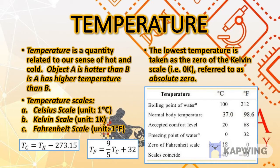We can convert from one scale to another using the following equations. To convert between Celsius and Kelvin: TC = TK − 273.15, where TC is temperature in Celsius and TK is temperature in Kelvin. To convert between Celsius and Fahrenheit: TF = (9/5)TC + 32, where TF is temperature in Fahrenheit.